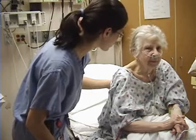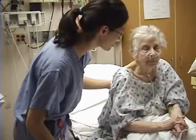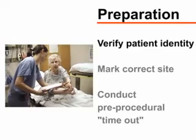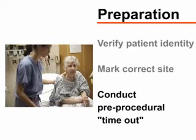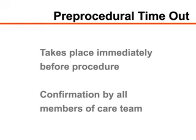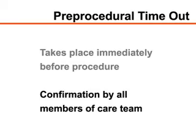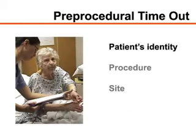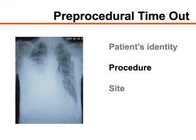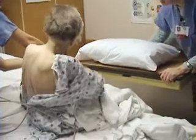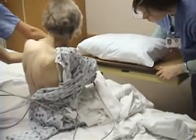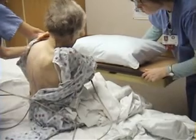Explain the procedure to the patient and obtain written informed consent. You should also verify the patient's identity, mark the correct site, and conduct a pre-procedural timeout. The timeout, which takes place immediately before the procedure is started, consists of confirmation by all members of the care team that the patient's identity, the procedure he or she is to undergo, and the site of the procedure are all correct. You will need an assistant to help position and monitor the patient and assist with the collection of pleural fluid.